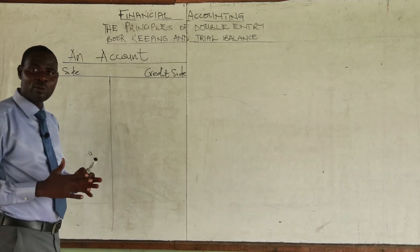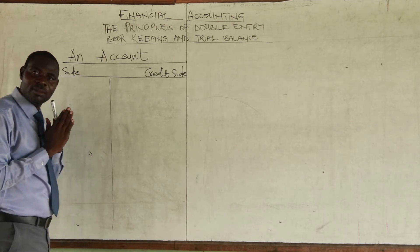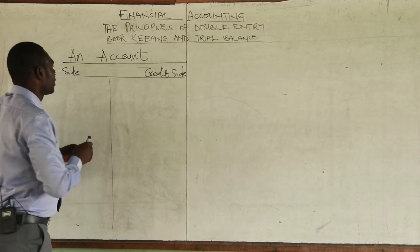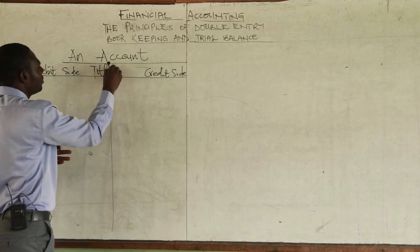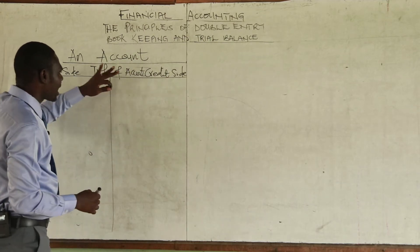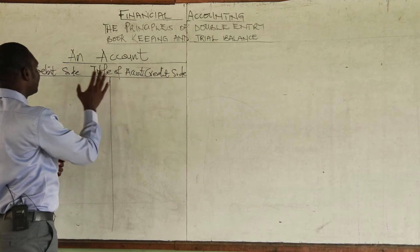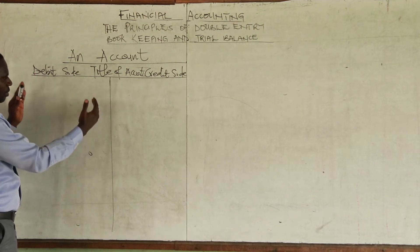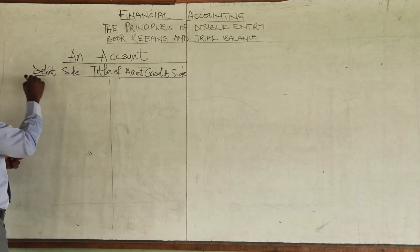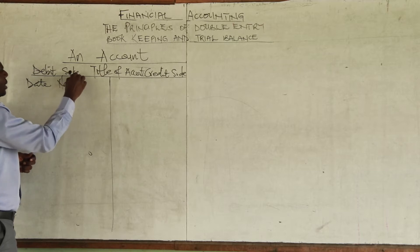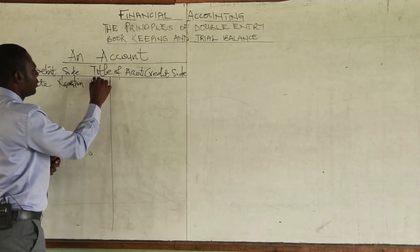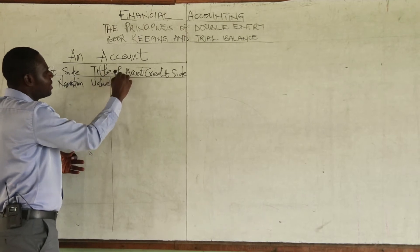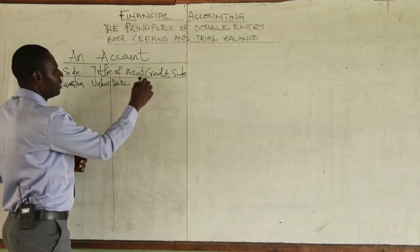The name of the account is written at the top — we call it the title of the account. Examples include Kwami's account, ABC account, purchases account, sales account, rent account, and fixed asset accounts such as motor van account, machinery account, and land and building account.